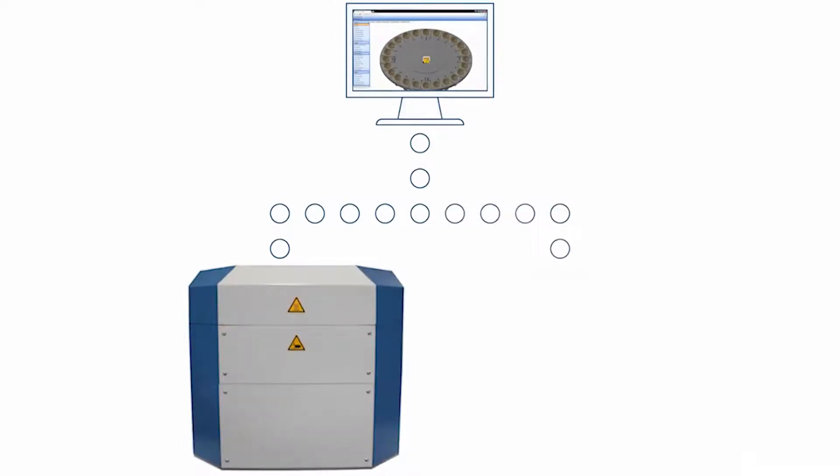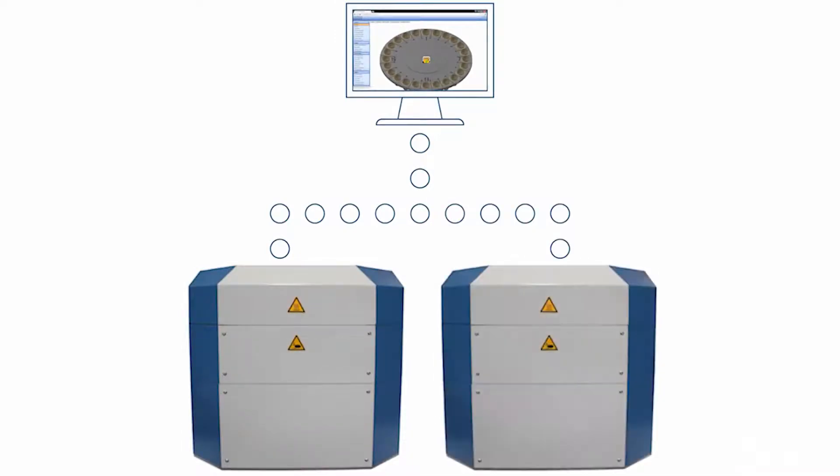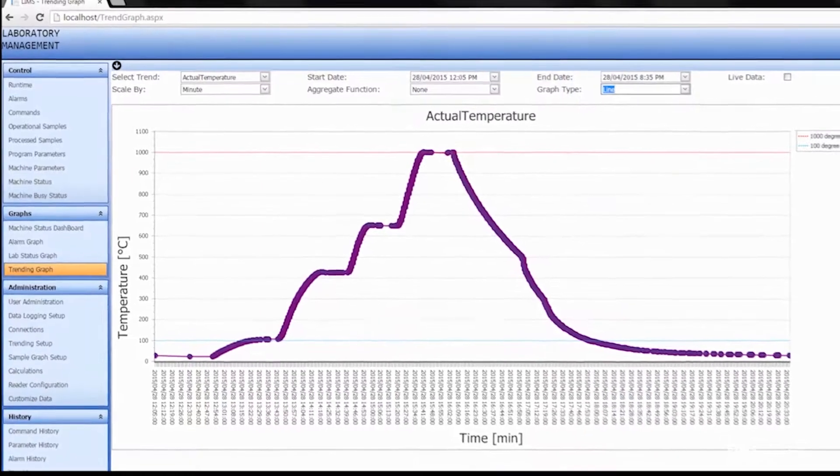Two Apollo units can be linked together in dual mode operation to analyze 48 samples at a time.